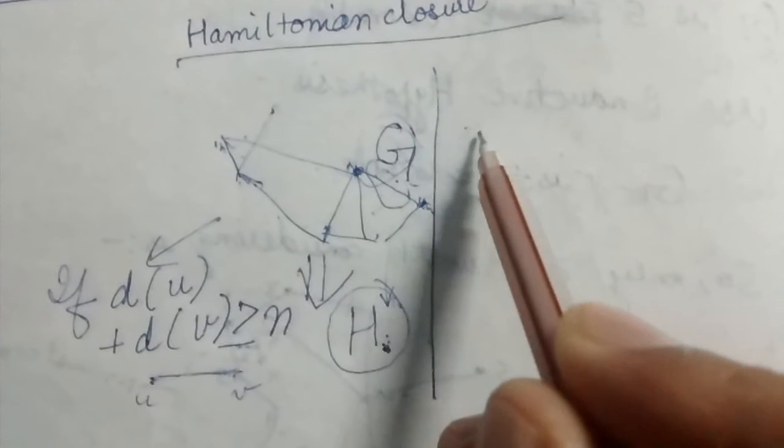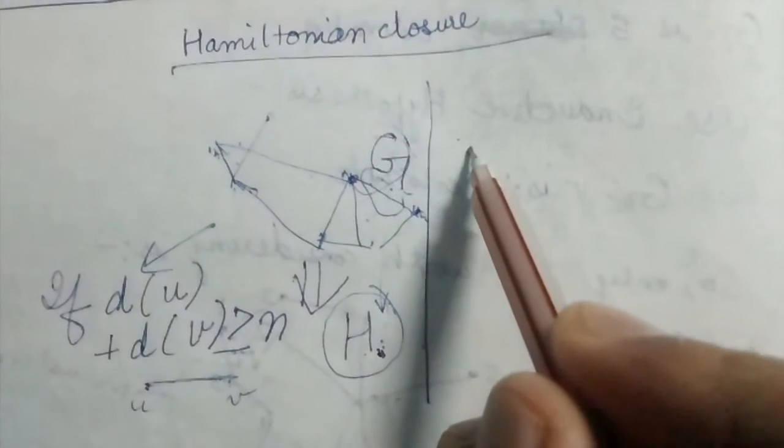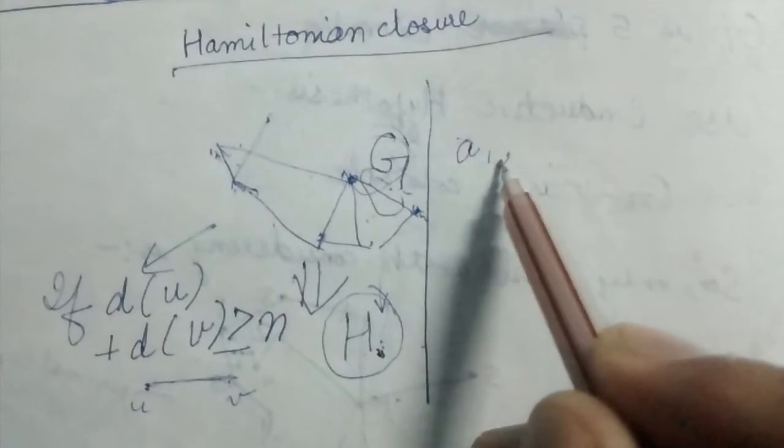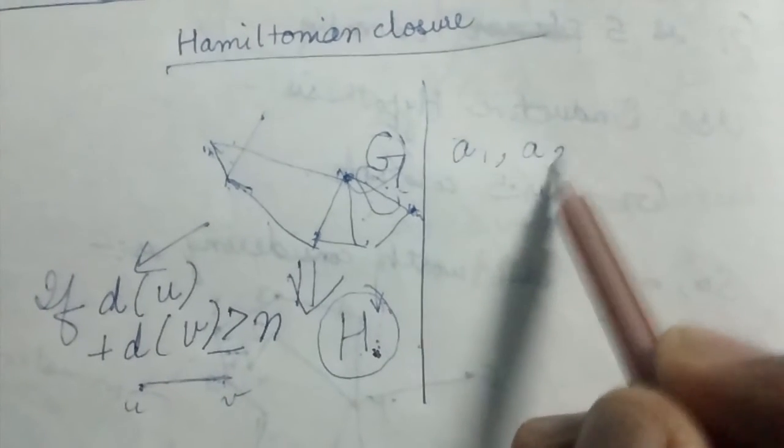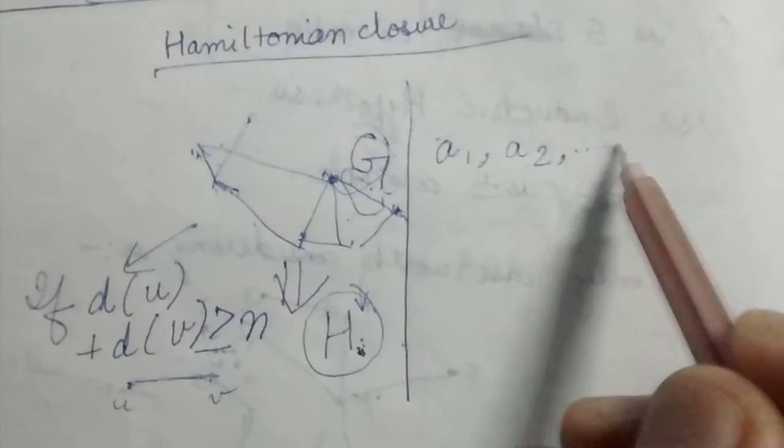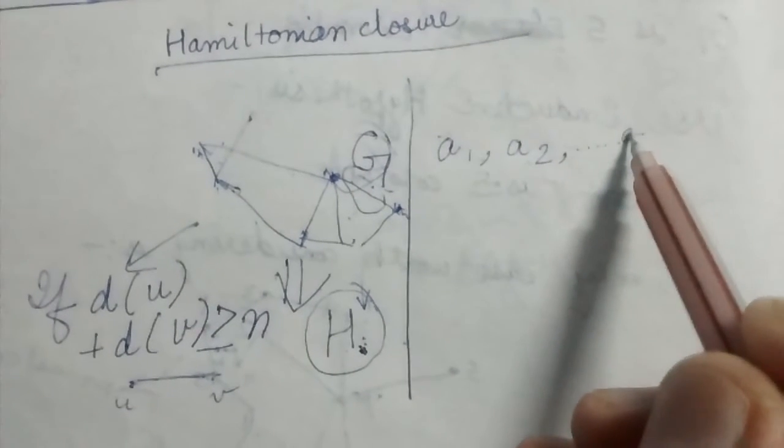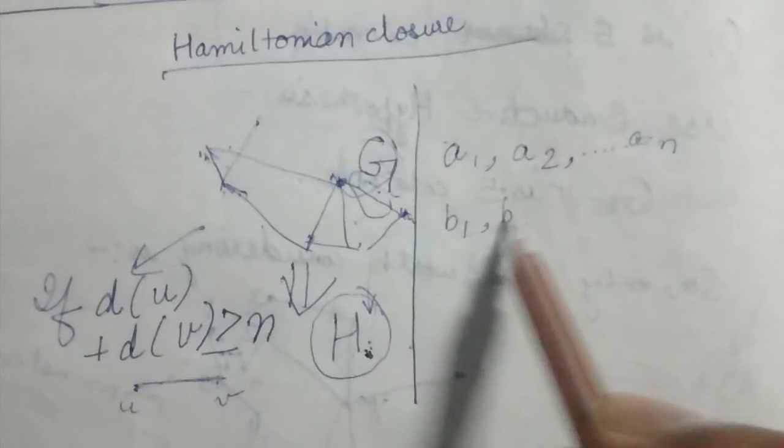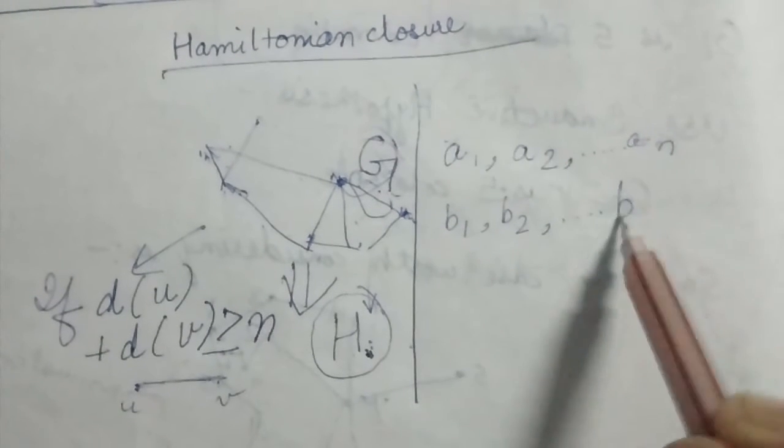So let us say in one of the methods we add the edges in this sequence. First we add the edge a1, then a2, and so on. And the other sequence, we add b1, then b2, and so on.